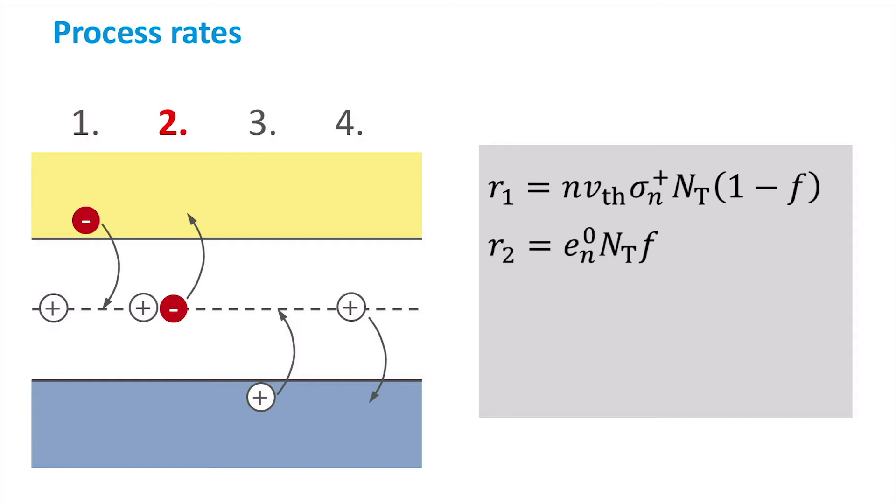The second rate has a simpler expression. It is again proportional to the trap density NT and to the occupancy f by electrons,